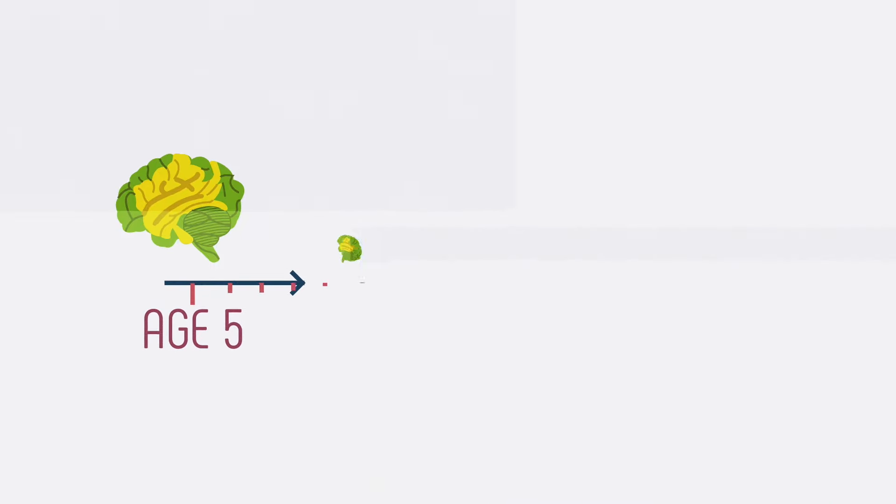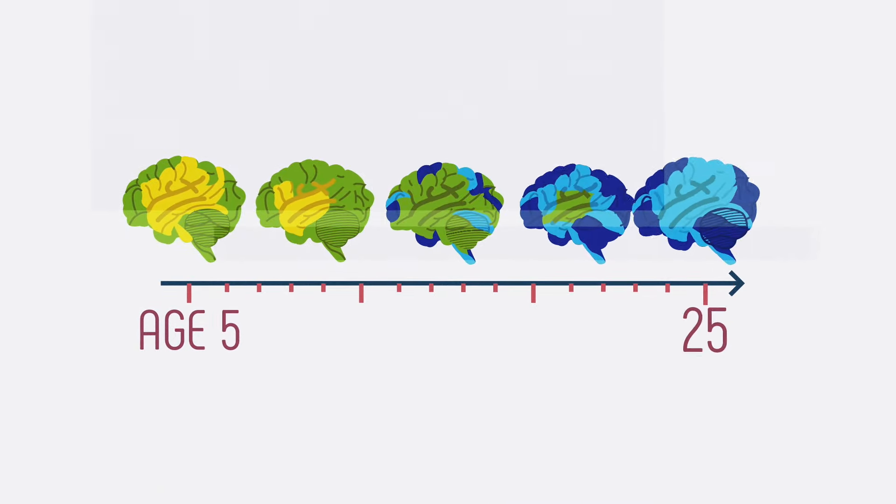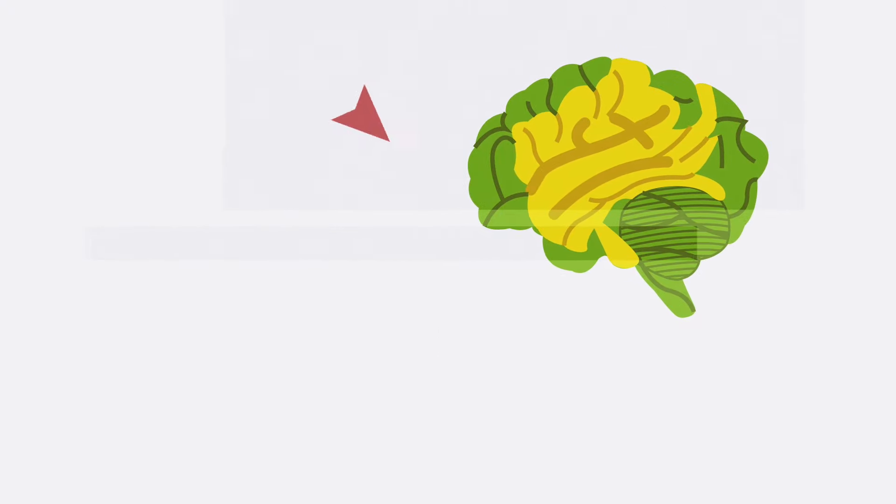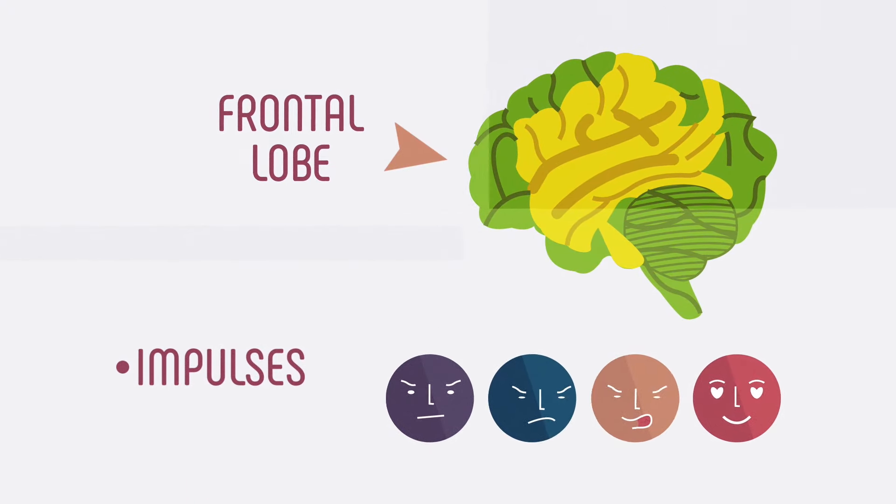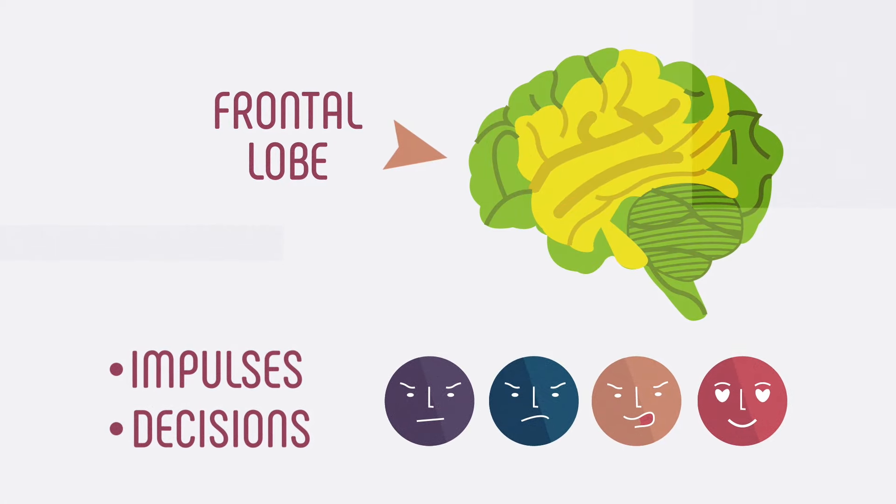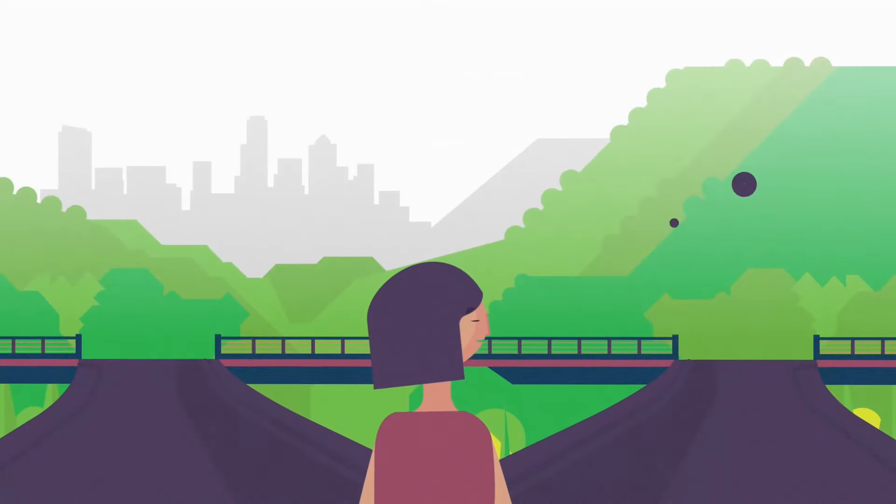The brain continues to develop until a person is in their early to mid-twenties, with the regions of the brain to keep emotions and impulses under control and help us make decisions among the last to develop. This is also why adolescents are more likely to engage in risky and impulsive behaviors.